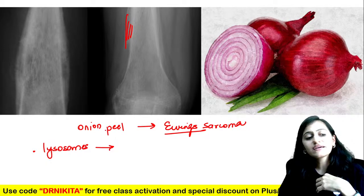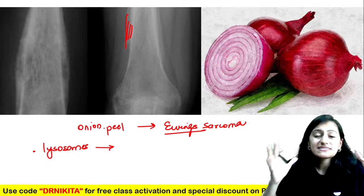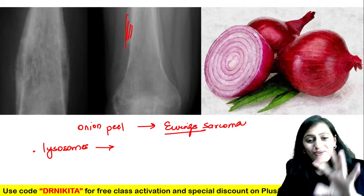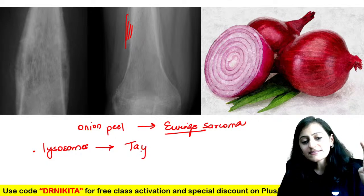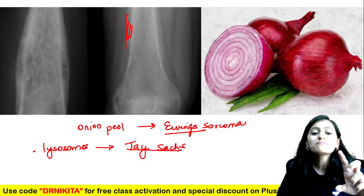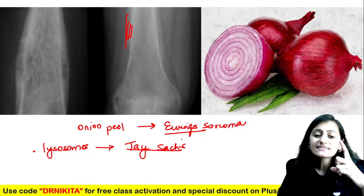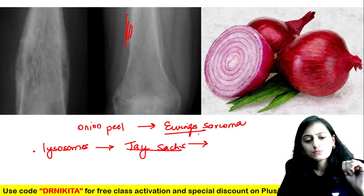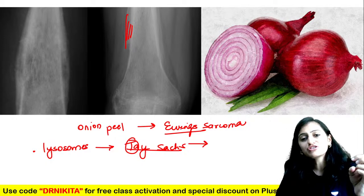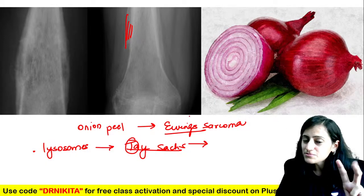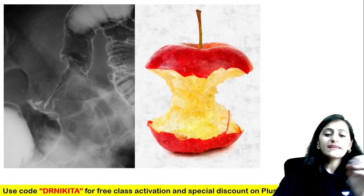The onion skin appearance of lysosomes is seen in lysosomal storage disorders. It is Tay-Sachs — not Niemann-Pick, which has zebra bodies. Tay-Sachs is GM2 gangliosidosis with hexosaminidase A deficiency, cherry red spot without hepatosplenomegaly, and exaggerated startle reflex.